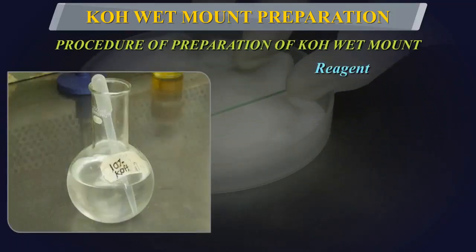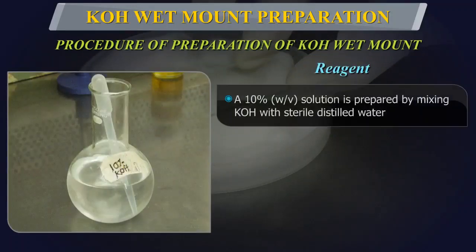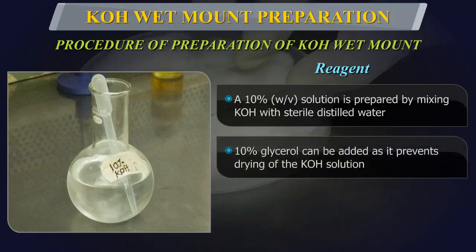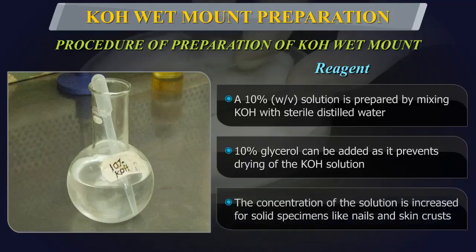A 10% weight-by-volume KOH solution is prepared by mixing potassium hydroxide with sterile distilled water. Ten percent glycerol can be added to prevent drying of the solution. Usually a 10% solution is adequate to dissolve thin hair and scales, but the concentration may be increased to 10–40% for solid specimens like nails and skin crusts.